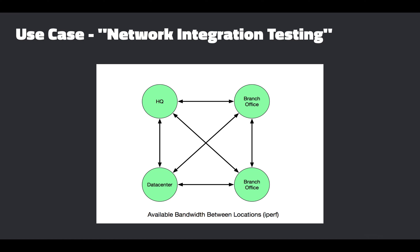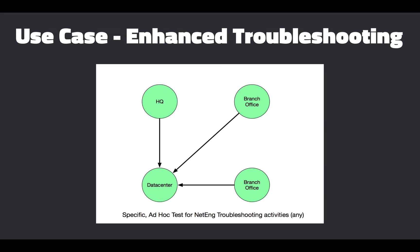Another use case is network integration testing. I believe there's a use case for running a tool like this in the context of a continuous integration system — you could run these network integration tests before and after the changes you make to a network. For instance, some network engineers like to use tools like iPerf to test available bandwidth between two points. What if you could run iPerf in a full mesh fashion and do this periodically to see how available bandwidth changes over time? Finally, you don't have to be running TODD all the time — TODD can allow us to gather metrics on demand, which is really useful when you're troubleshooting a network problem.